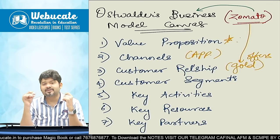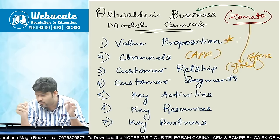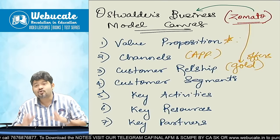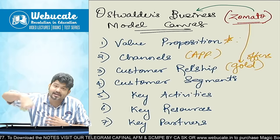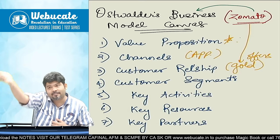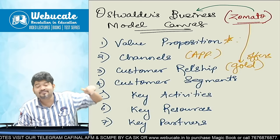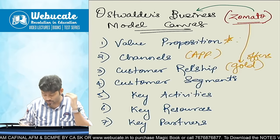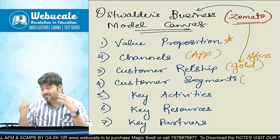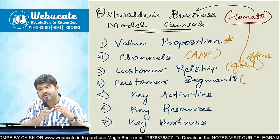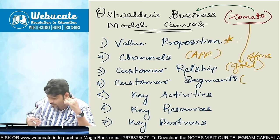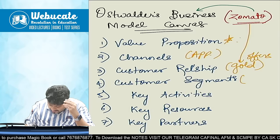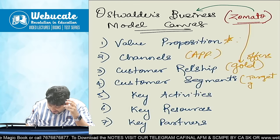Customer segments. Pehle customer segment mein tha ki only those people who are sitting at home woh hi Zomato se order karenge. But aaj ki taarikh mein Zomato ne dine-in bhi bana diya — toh Zomato mein agar aap kahin bahar khaana khaane ko ja rahe ho, toh wahan par bhi Zomato aapko additional discount dilwa dega. So they have improved their customer segment. Customer segment jitna bada hoga, utna business jaldi scale-up karega. Customer segments matlab target customer — pehle target customer was just a person sitting at home or at office, but now even if I am going out and eating somewhere, I will still use Zomato.